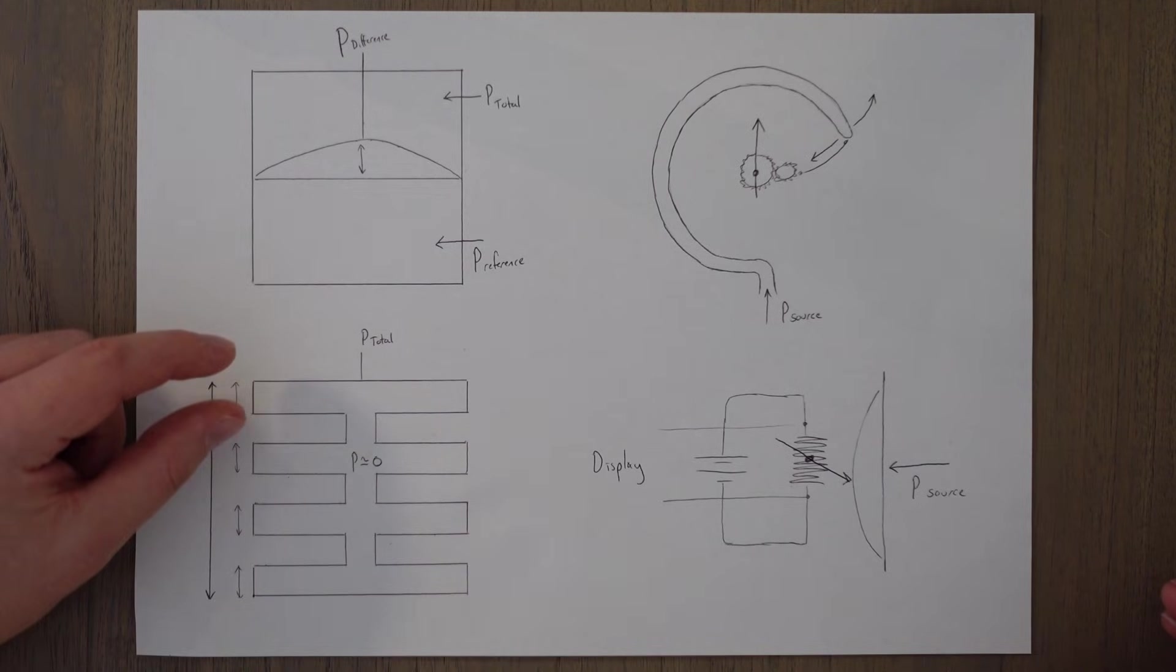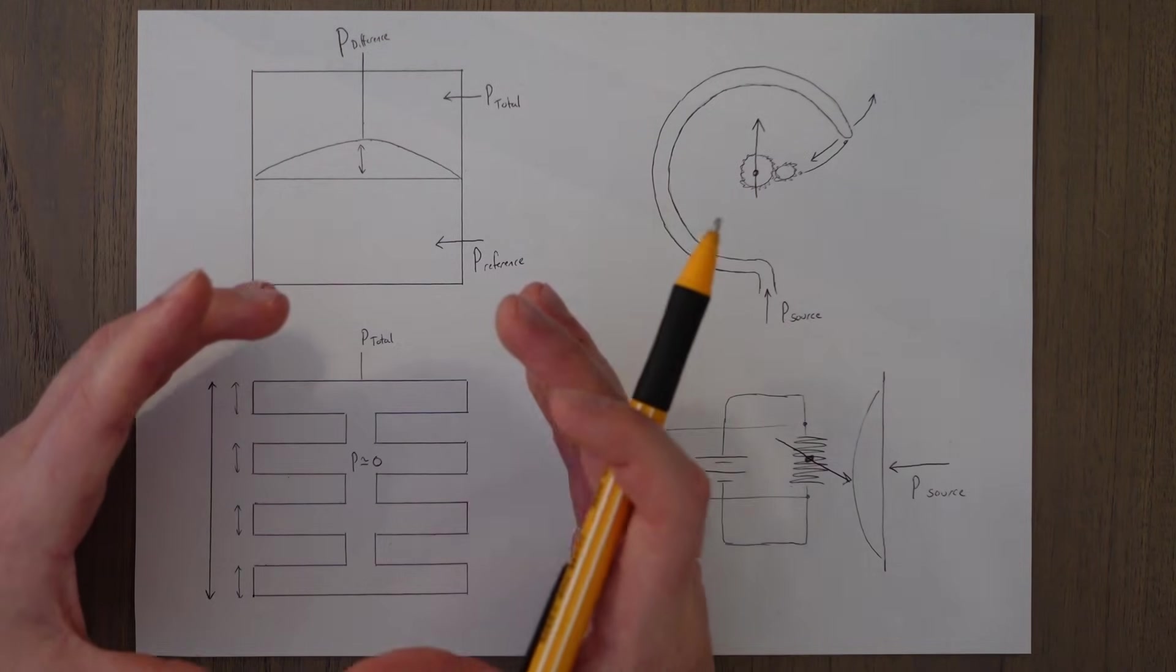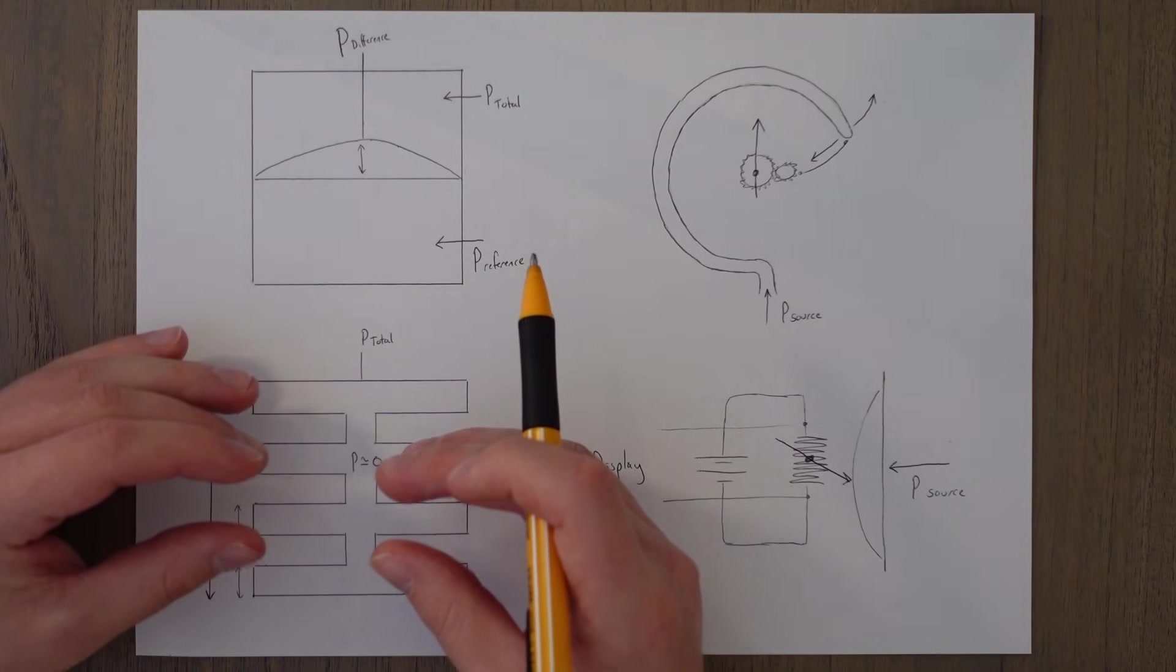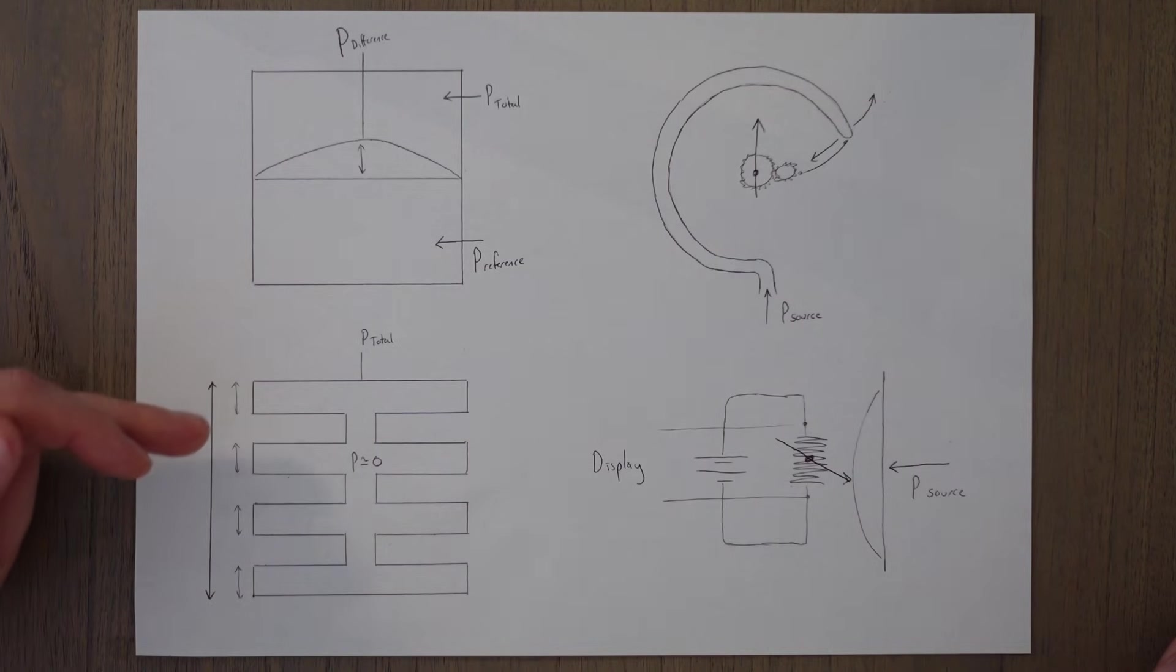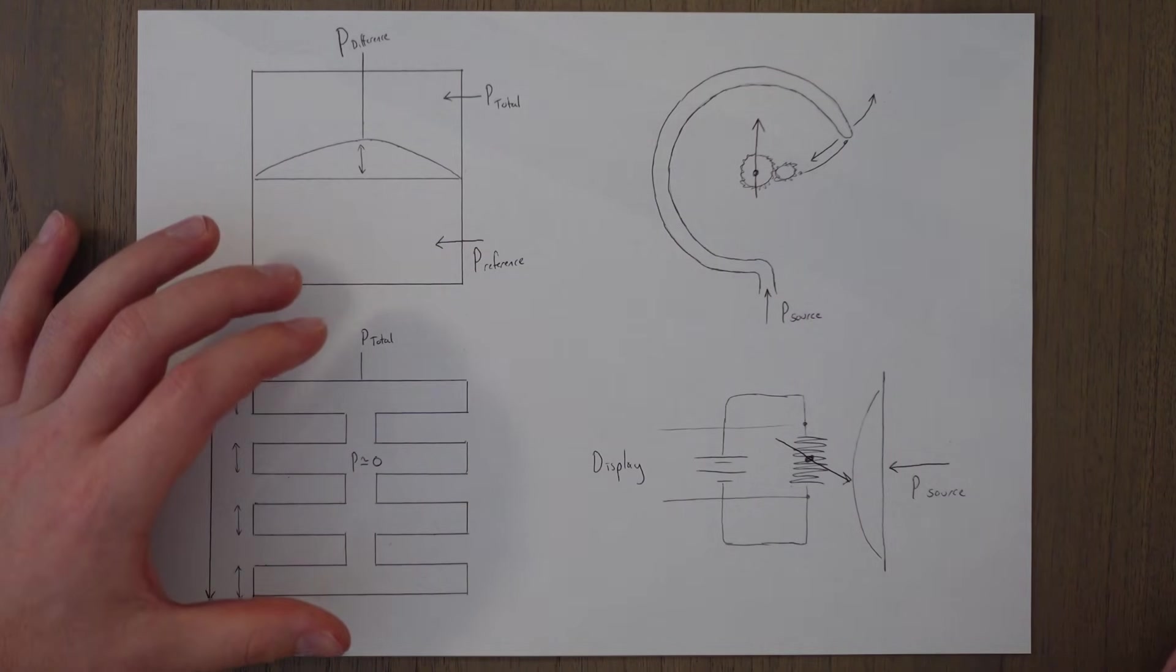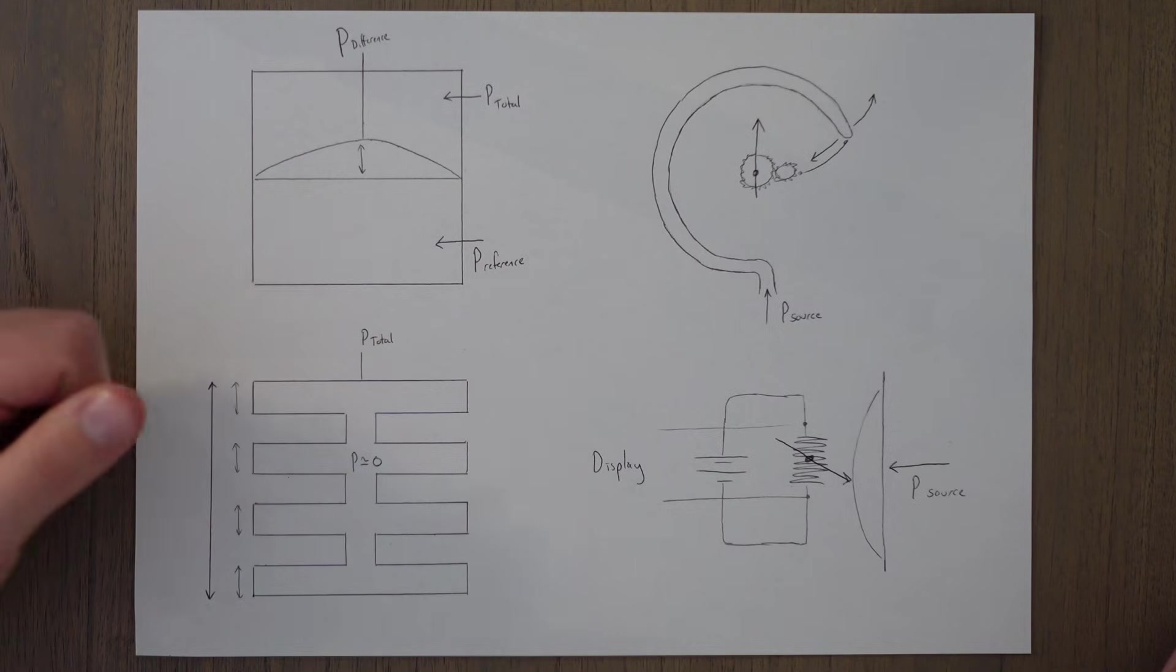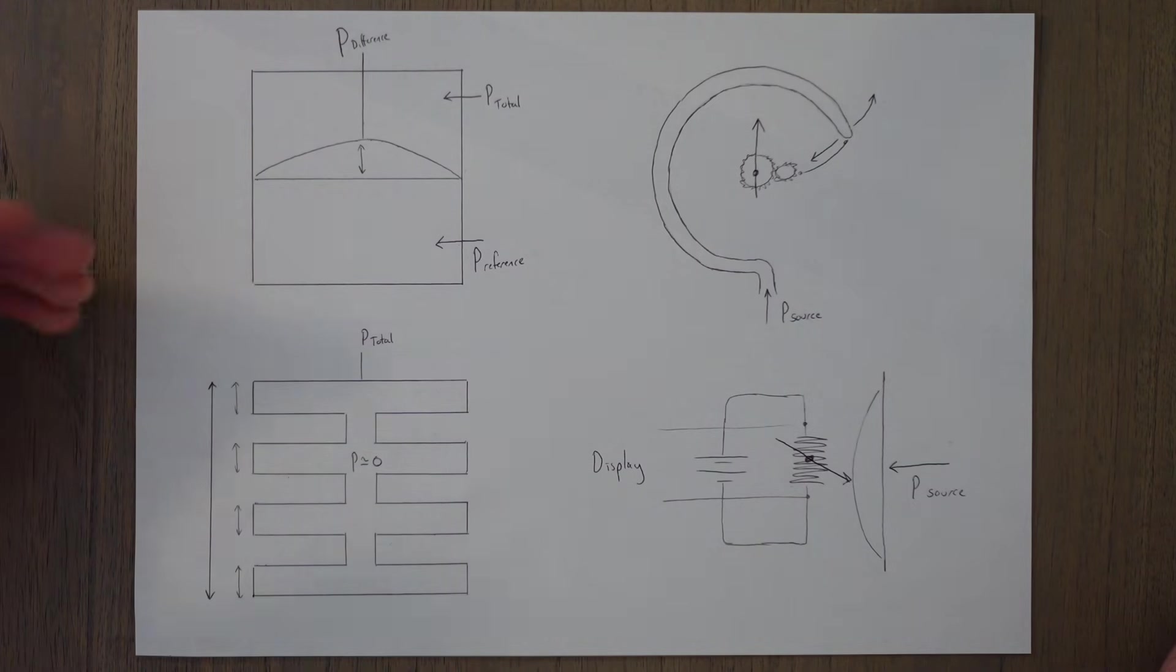The problem is we only get a small amount of movement, so what we can do is we can add loads of aneroid capsules together to create a bellows. The same principle applies if there's lots of pressure around the outside of this, this whole thing will compress. If there's less pressure around the outside, the thing will expand. The advantage of having them all stacked together is we get a lot of movement and we can be much more precise with our measurements of total pressure, which you might use for things where you want to set a pressure reading, like in a piston engine.